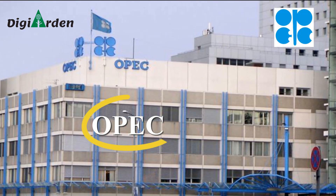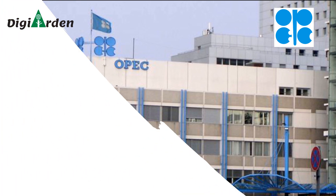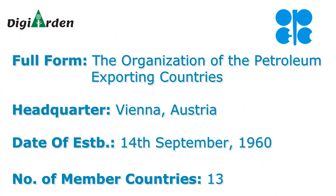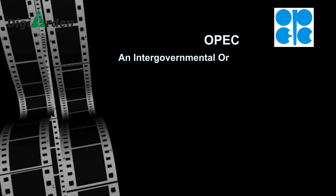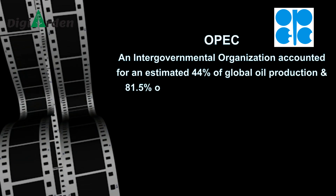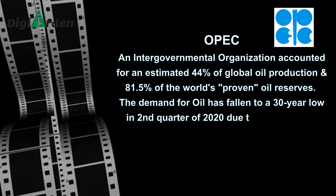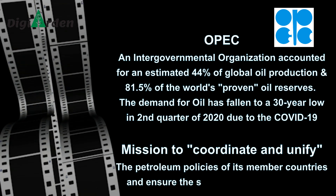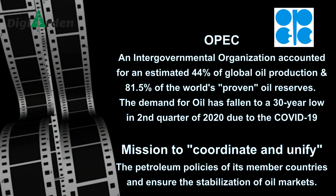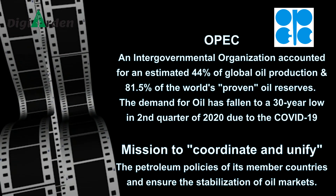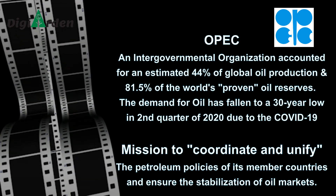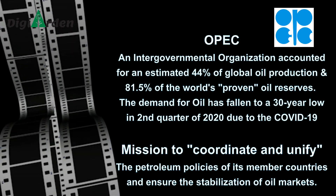Last and the tenth one of this episode is OPEC. Full form stands for the Organization of the Petroleum Exporting Countries. Headquarter placed at Vienna, Austria. Established on 14 September 1960. Oil producing member countries: 13. OPEC is an intergovernmental organization accounting for an estimated 44 percent of global oil production and 81.5 percent of the world's proven oil reserves. The demand for oil fell to a 30-year low in the second quarter of 2020 due to the COVID-19 pandemic. Its mission is to coordinate and unify the petroleum policies of its member countries and ensure the stabilization of oil markets.